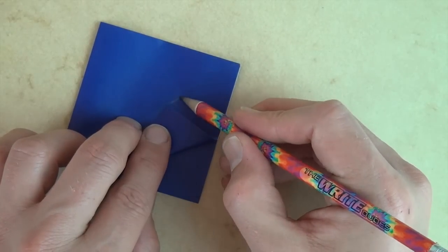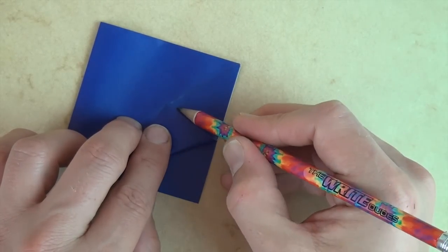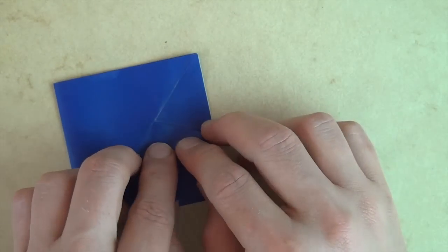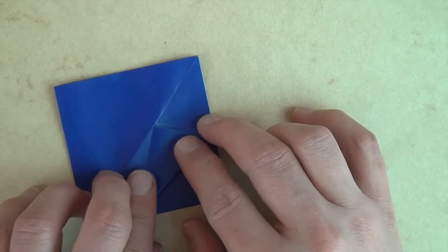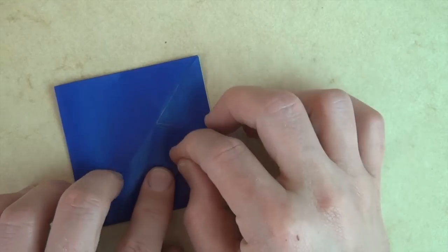So this right here is an isosceles triangle. You see the lengths of these two sides are the same. So let's fold it like that.